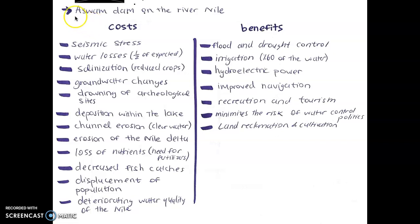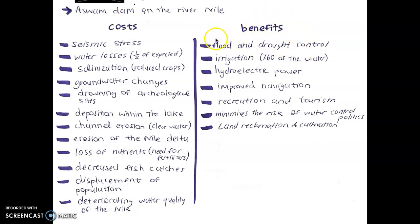In this case, we consider the Aswan Dam on the River Nile in Egypt. I would like to start with the costs and benefits. So the advantages or benefits of the Aswan Dam, or dams in general, include flood and drought control.